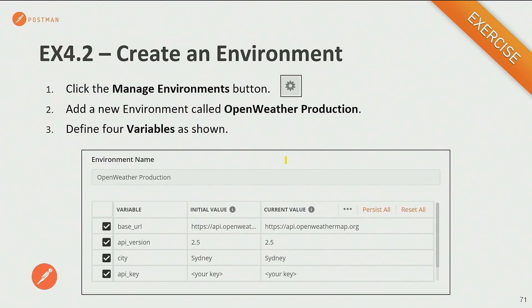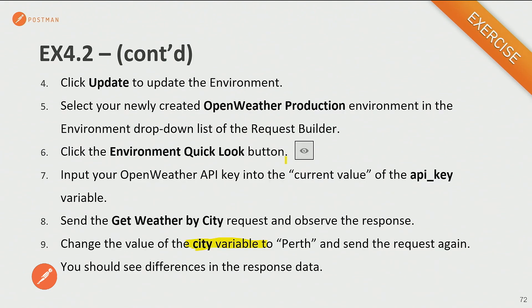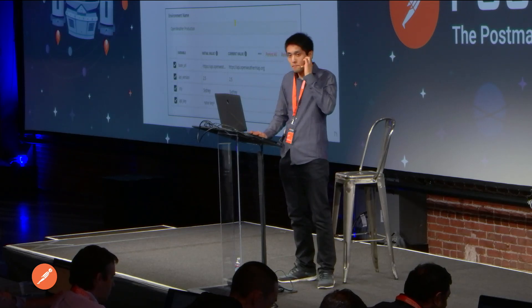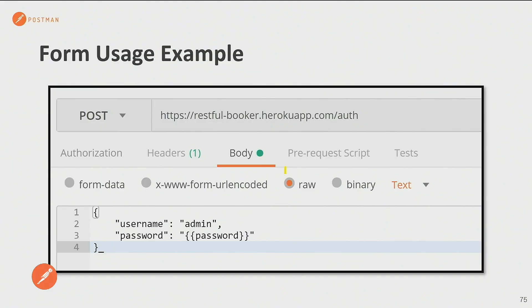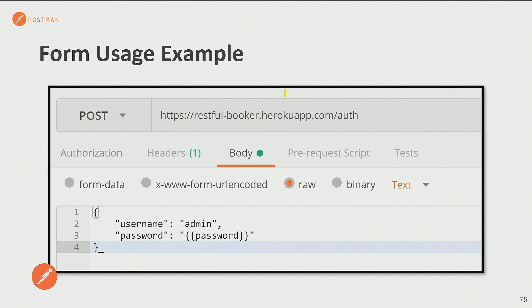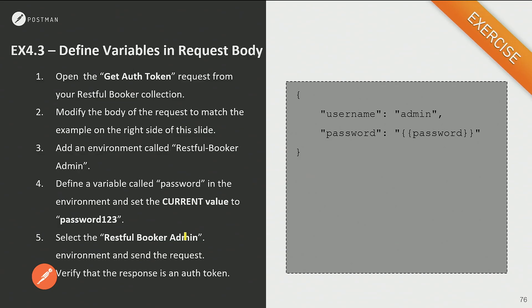That's exercise 4.2. We can also use variables within a form body — for example, this is the body of a request where I've specified a variable for password. Instead of hard coding the password, which is not good practice, I use a variable and define the value within an environment. So we'll go to the Get Auth Token request that we set up previously and change the body so that instead of hard coding the password, we define a variable called password.